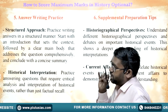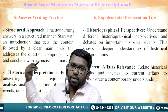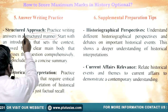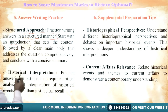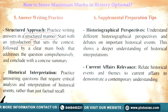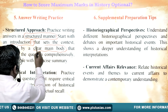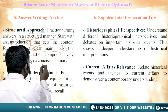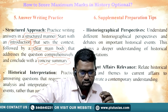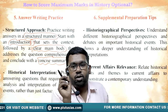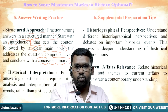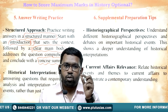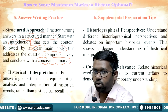The fifth stage is answer writing practice. We must practice answers in a structured manner. Start with an introduction that sets the context of the answer, followed by a clear main body that addresses the question comprehensively, and conclude with a concise summary. For a 250-word answer, we should not write more than 30 words in the introduction, and the same for the conclusion — ideally within 25 words, or two good sentences of about 15 words each.